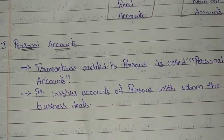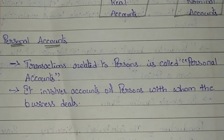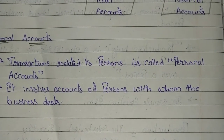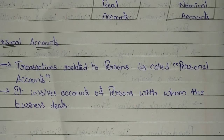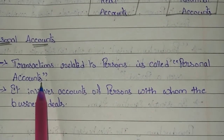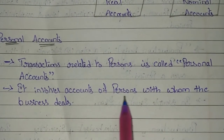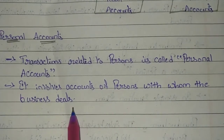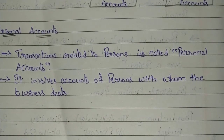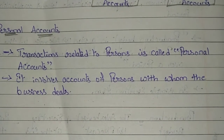The first one is personal accounts. Transactions related to persons are called personal accounts. Any transaction of business which is related to persons — they are called personal accounts. It involves accounts of persons with whom the business deals.